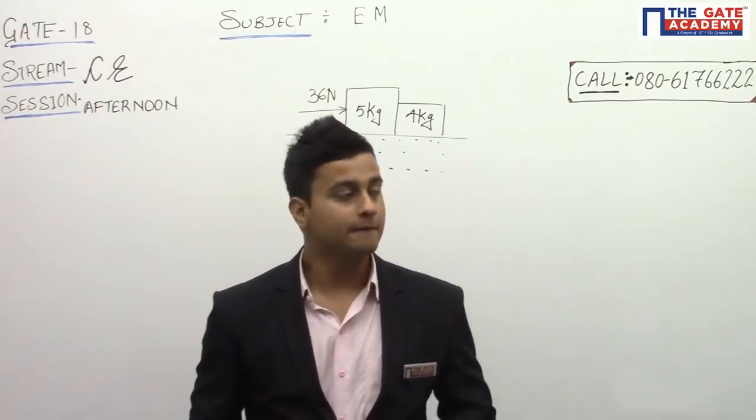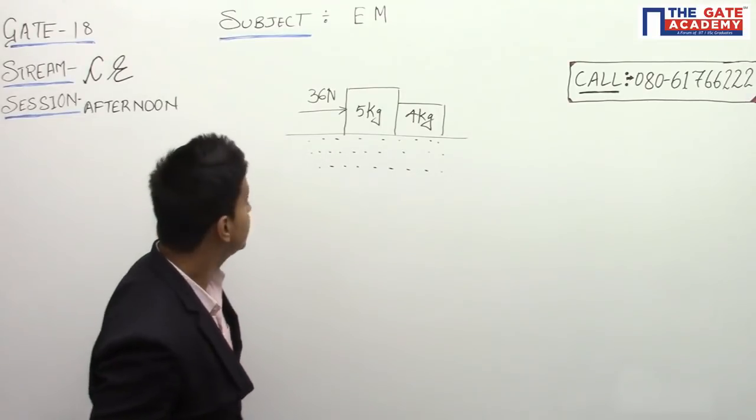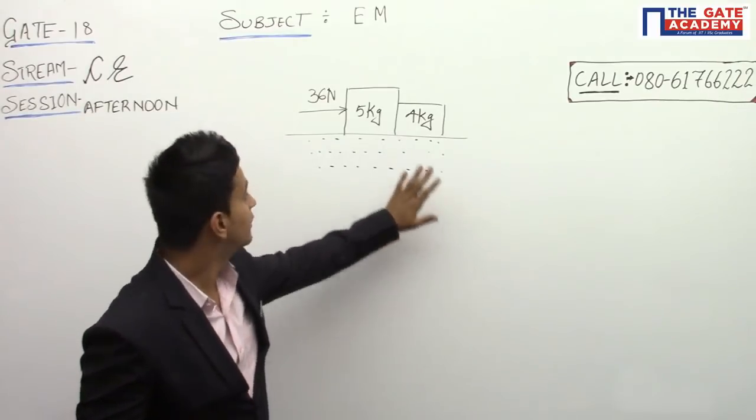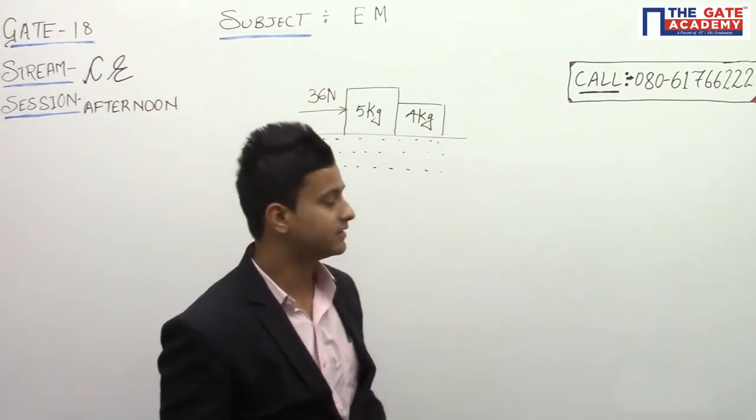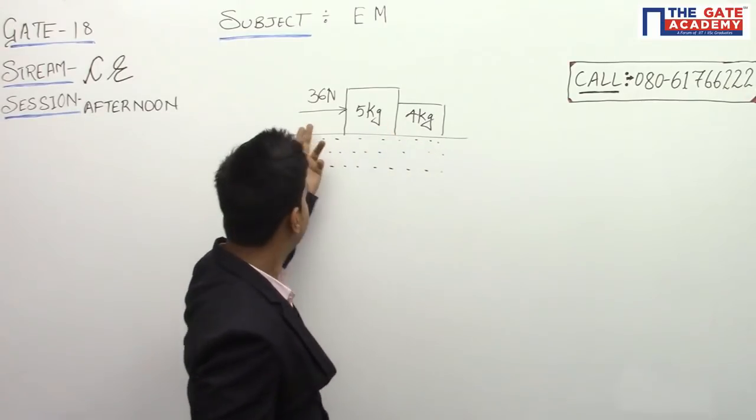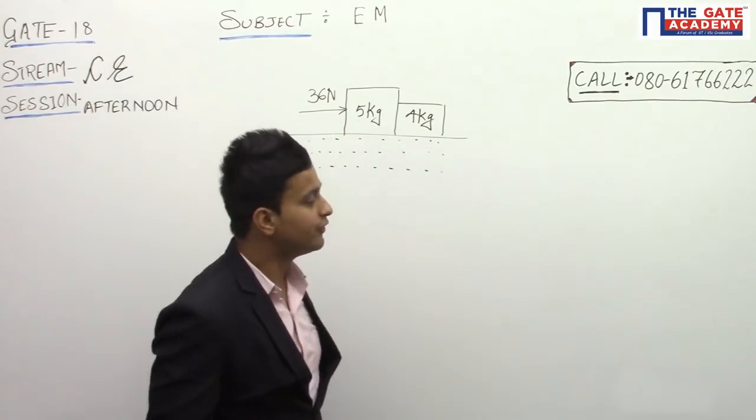Okay students, we are here to record the Civil Engineering afternoon session, second paper. The question is a memory-based question from the topic of Engineering Mechanics. There are two blocks, one of 5 kg and one of 4 kg, being acted upon by a force of 36 Newton. We have to find out the contact force between these two bodies.